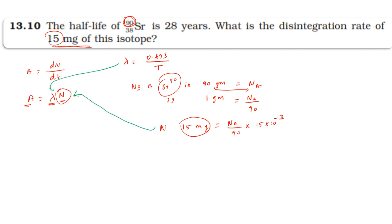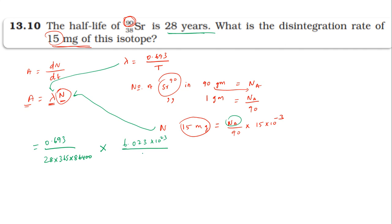Substituting: lambda = 0.693 divided by T½ where T½ = 28 years. Convert 28 years to seconds: 28 × 365 days × 86,400 seconds. Then multiply by N = (6.02×10²³ / 90) × 15×10⁻³.